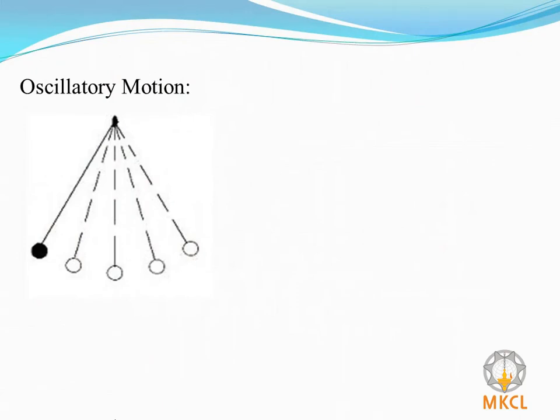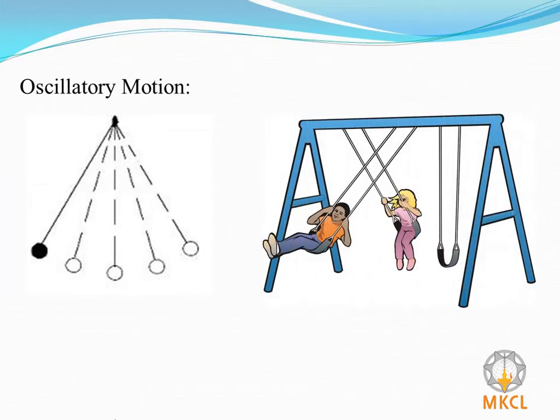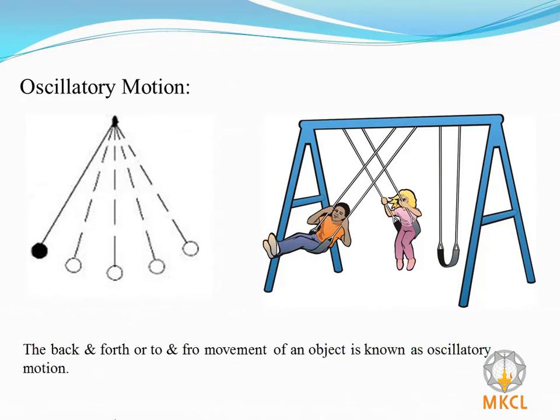A pendulum moves to and fro between two extreme positions. You must have played swings. Similarly, a swing moves between two extreme positions. Such a back and forth or a to and fro movement of an object is known as an oscillatory motion.